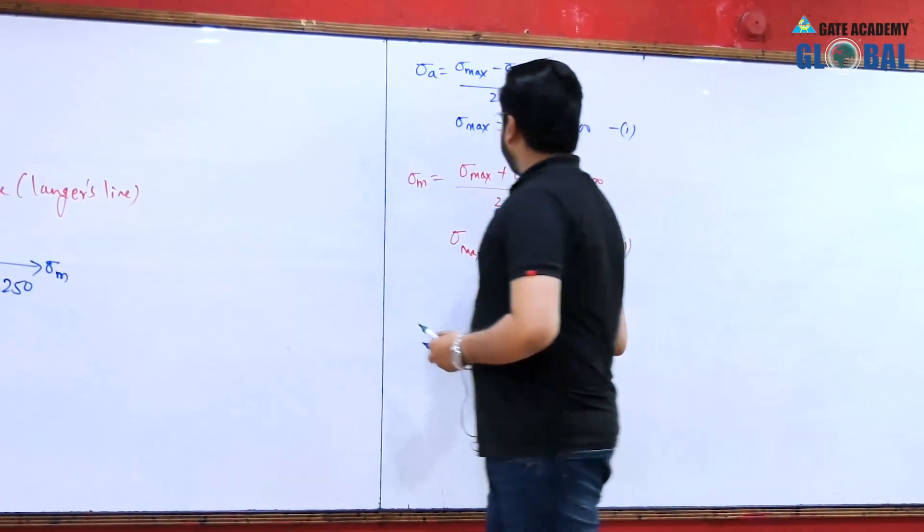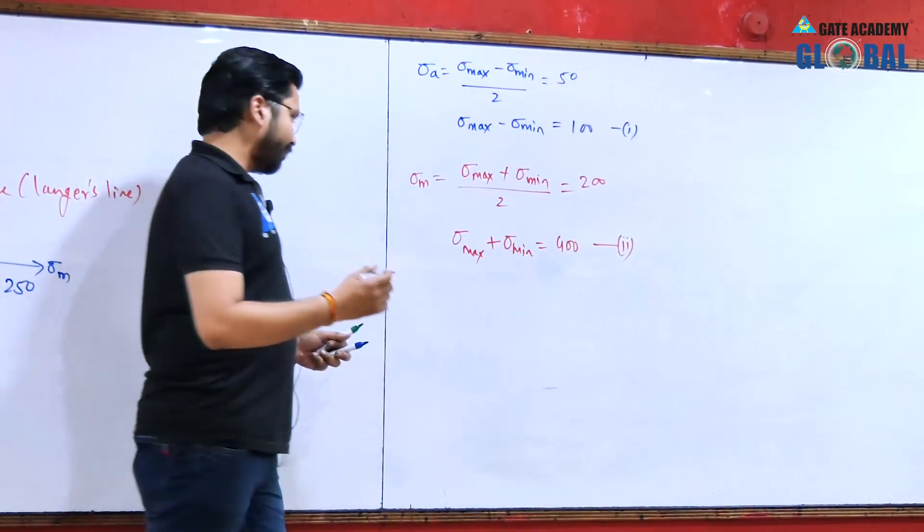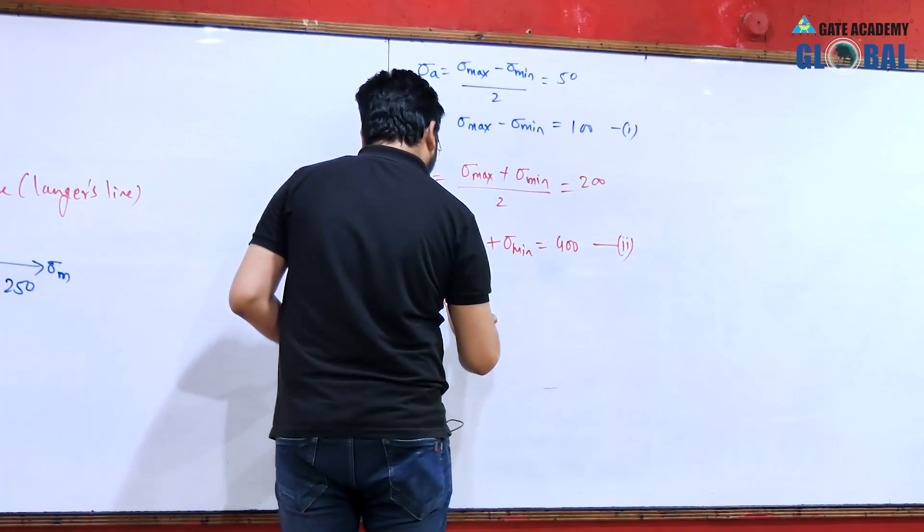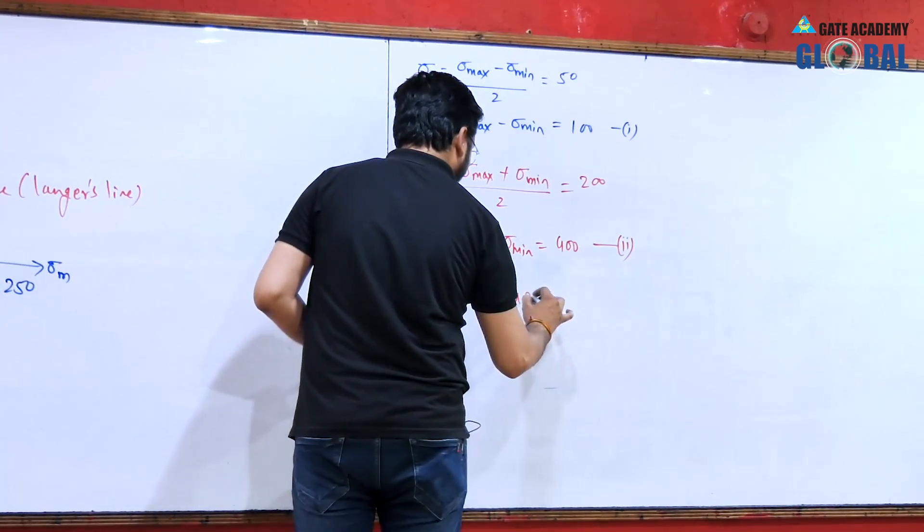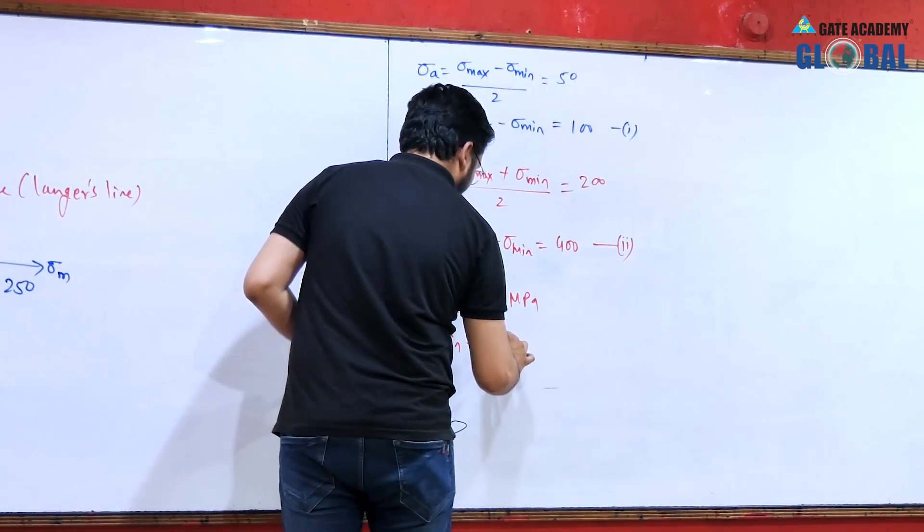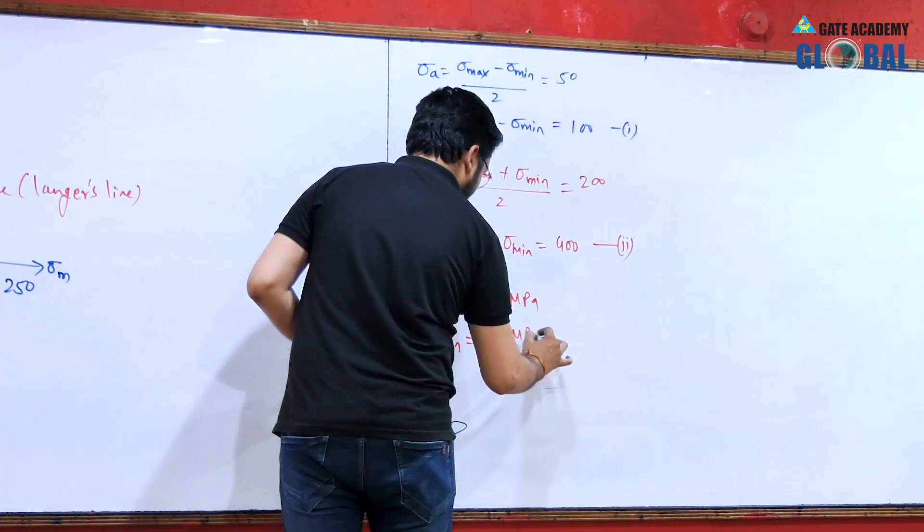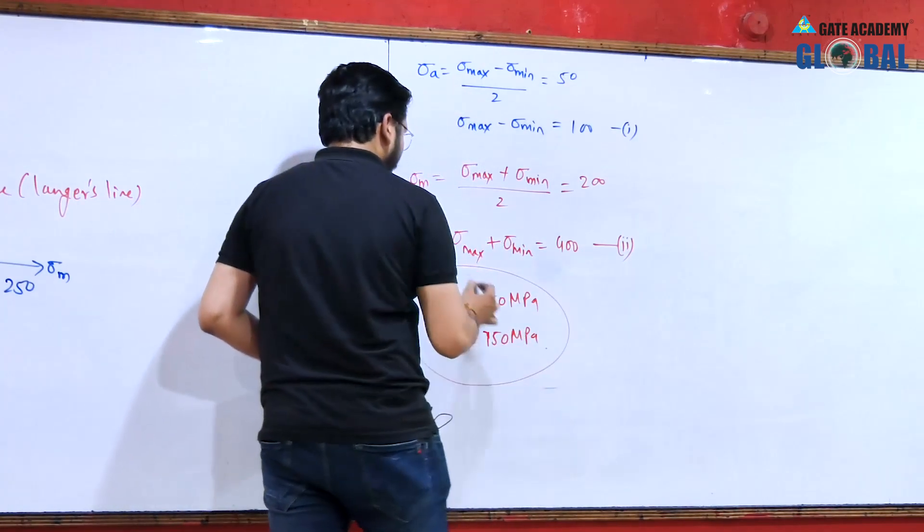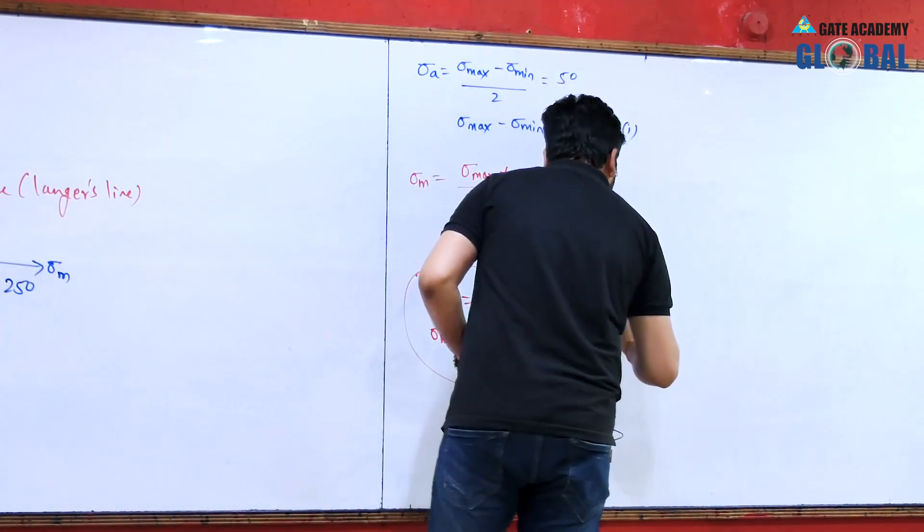Solving these two simultaneous equations we will be getting sigma max is equal to 250 mega Pascal and sigma minimum is equal to 150 mega Pascal. According to this combination the option number B will be the right answer.